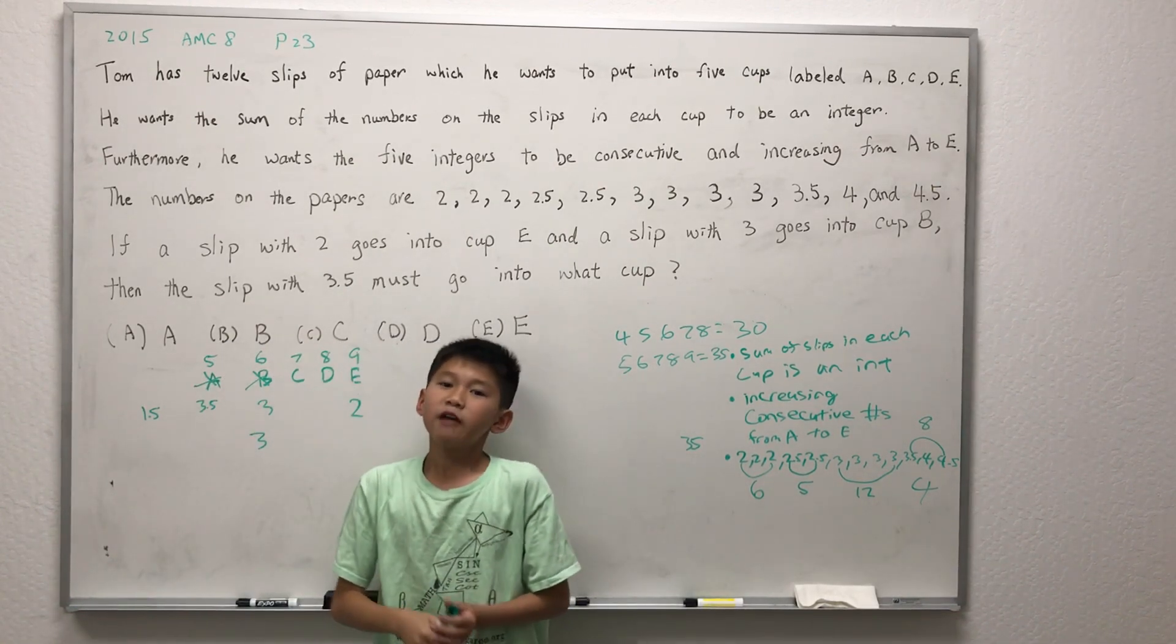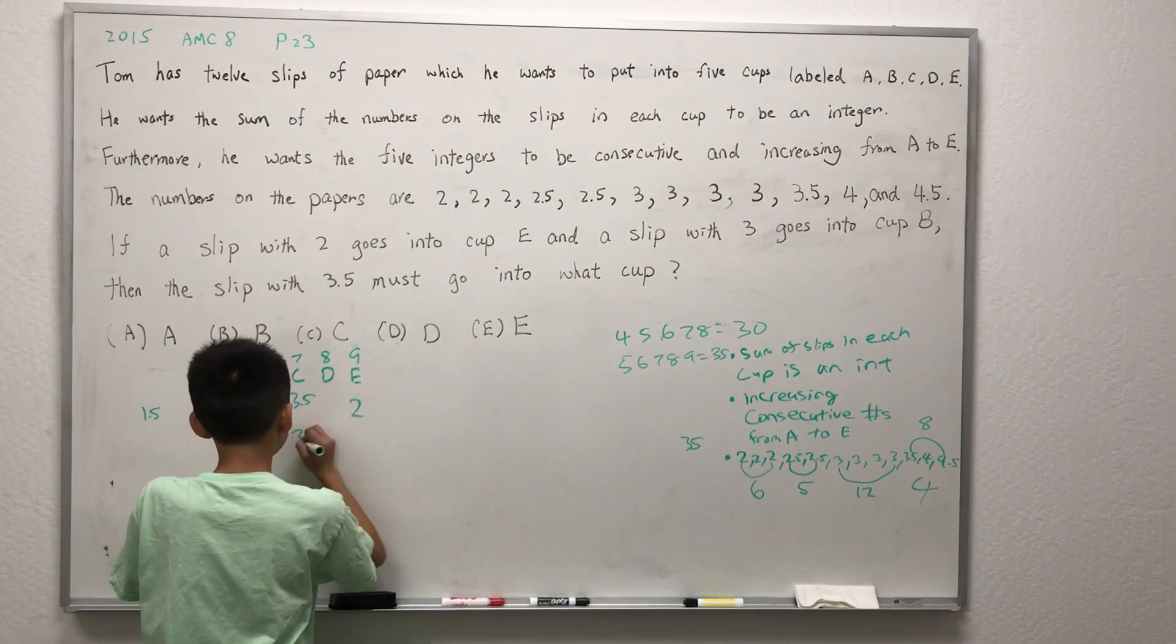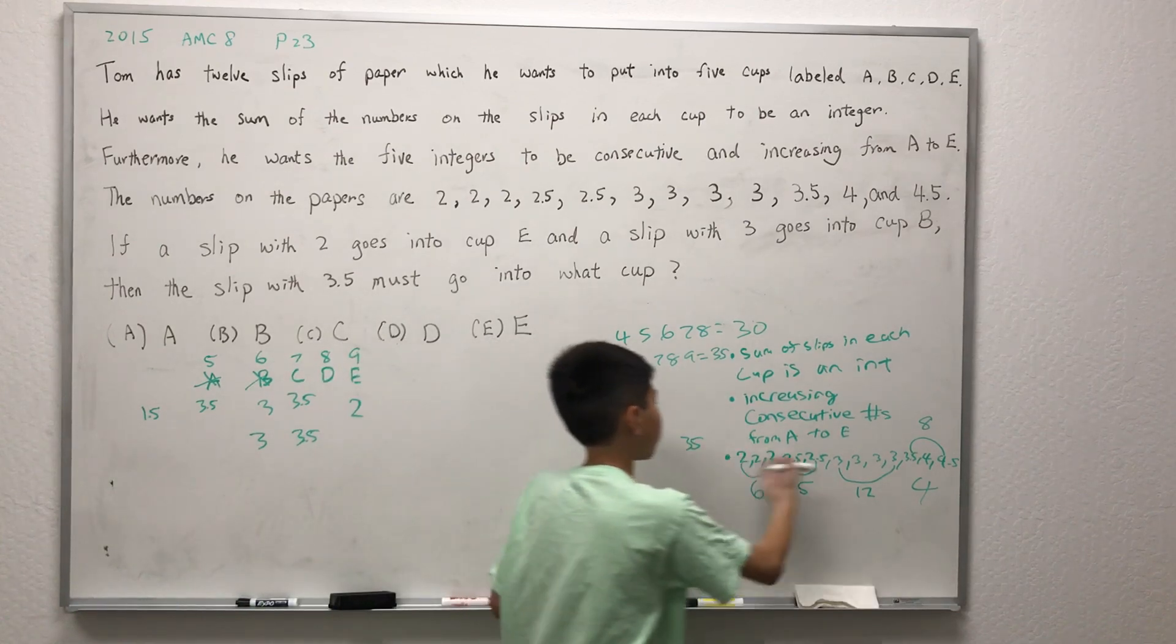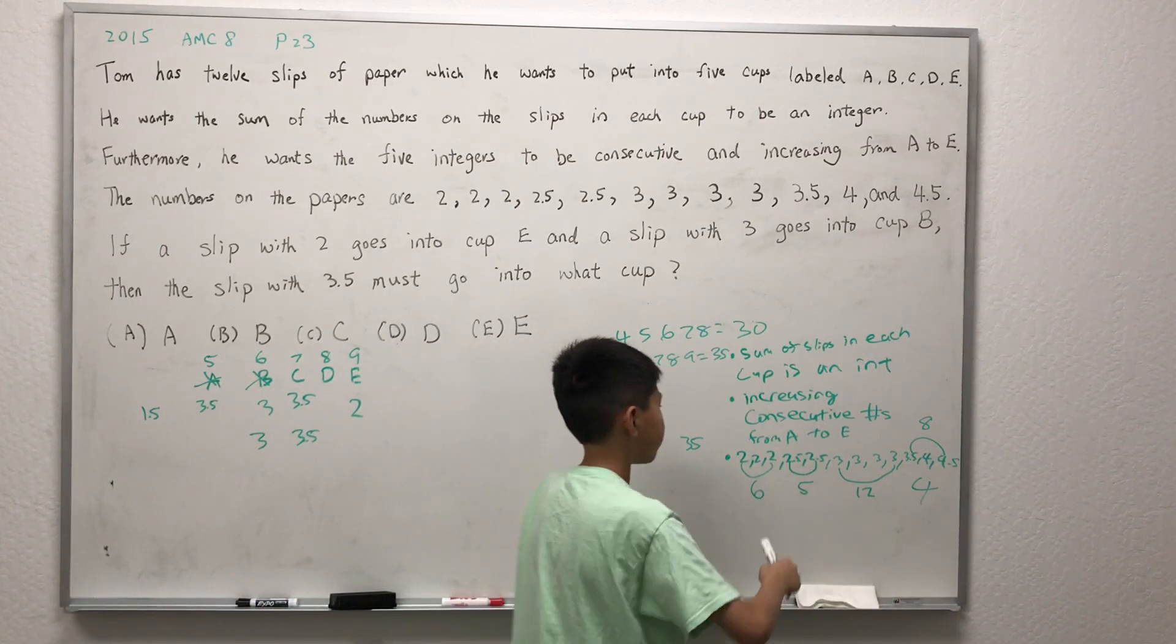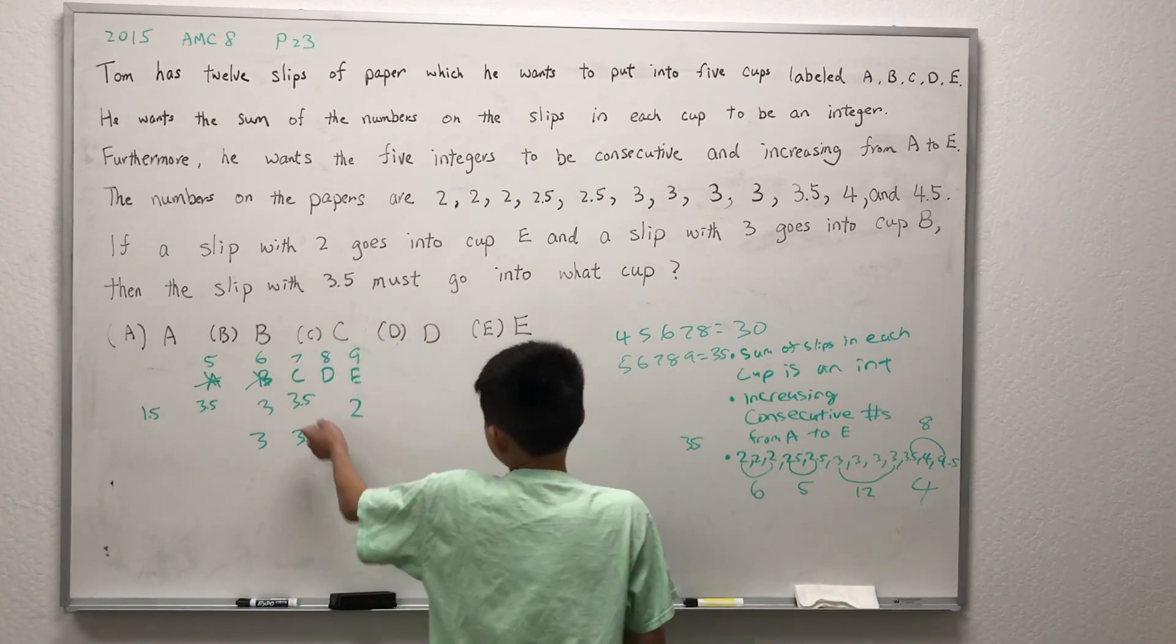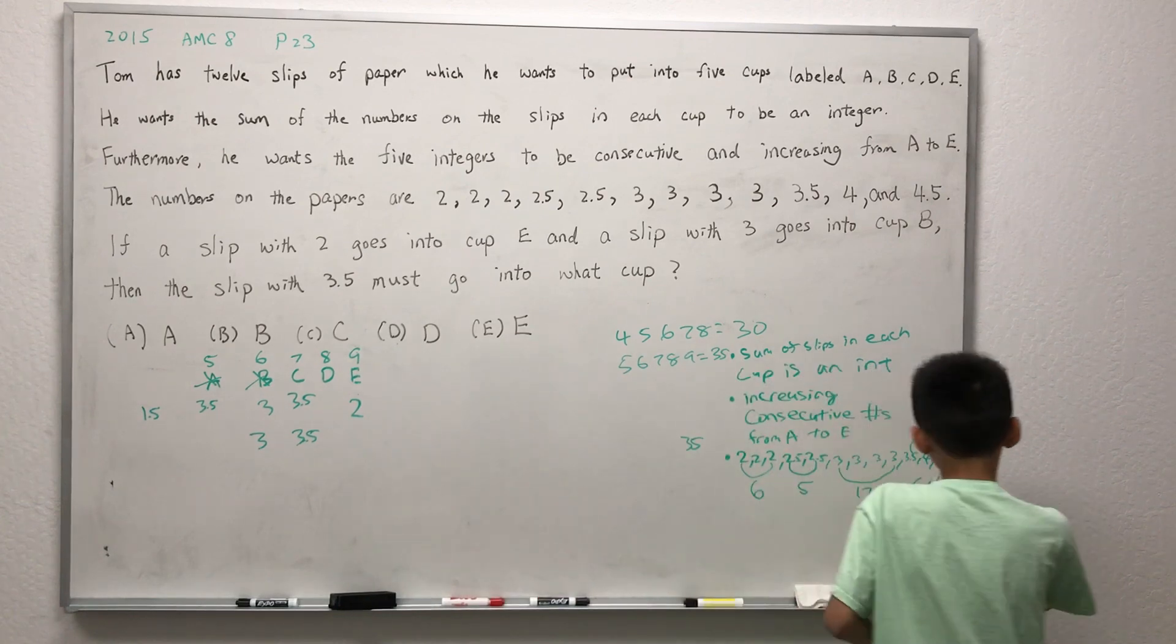Let's try C. If we plug in the value of 3.5 into C, there will be 3.5 remaining. Let's try to use the remaining slips of paper, excluding 3.5, to add up to 3.5. Let's try 4.5, it's too big. 4 is too big.